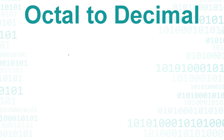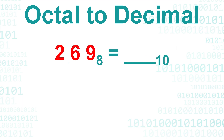Hi everyone, today we will have a new lesson: converting octal to decimal. I have here the number example 269 octal, and we will convert this one to decimal. First, we will put 8 here since this is octal, then we will put the exponents which are zero, one, two, three and so on.